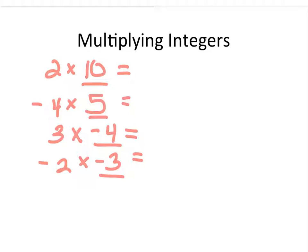Try these multiplication problems explaining your thinking. Pause the video and then see if your thinking matches mine. In the first problem, we have a group of 10 and we're going to take it 2 times. If I have 10 of something and I take it 2 times, I'm going to have 20. In the second problem, I have a group of 5 that I'm going to take negative 4 times — that means it's like subtracting it 4 times. So 5 times 4 is 20, but it's negative, so my answer is going to be negative 20.